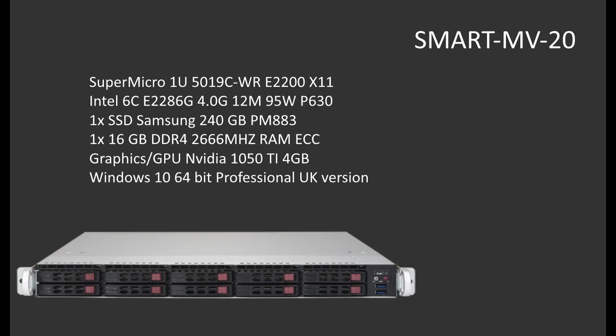Let's have a look at the hardware specification. Hardware parts may change; nowadays we recommend parts that are equivalent or better than the specified parts mentioned here. The Supermicro 5019C is used as a base system with an Intel 6-core E2286G processor on board. All decoding is done on the GPU; we recommend a GeForce 1050 from NVIDIA.